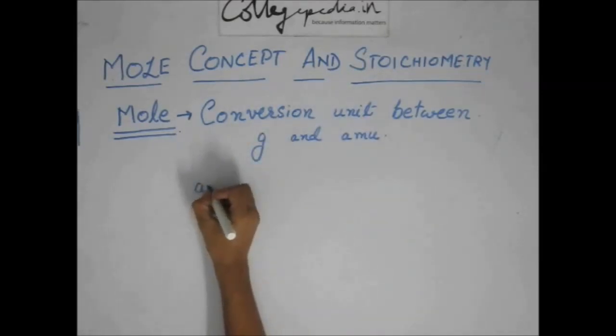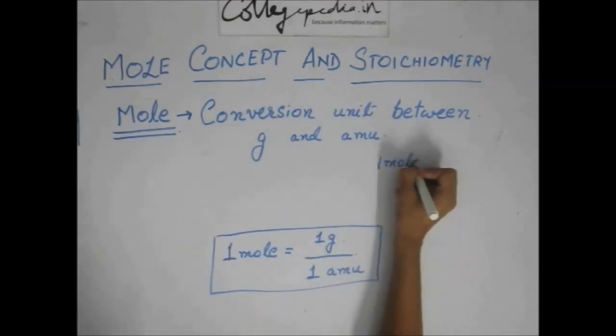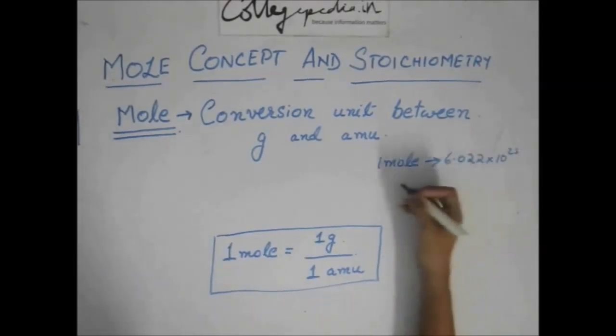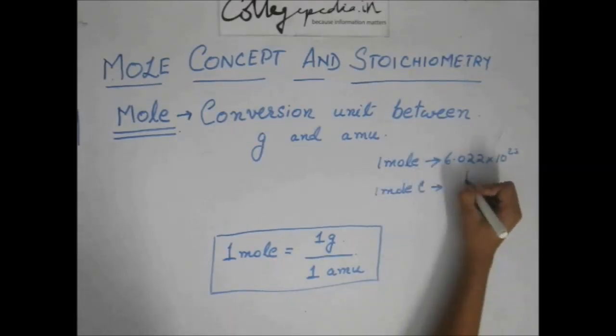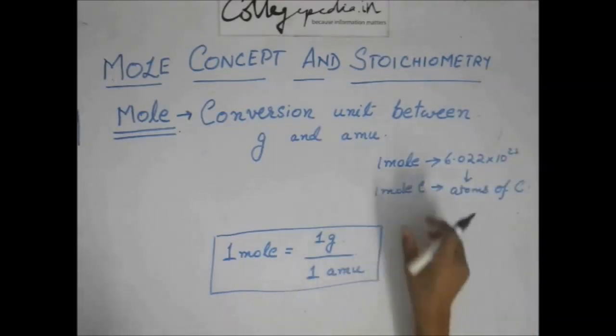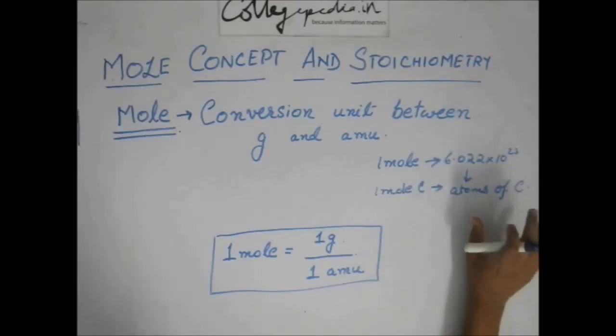Now, what is atomic mass unit? We have seen one mole is 6.022 into 10 to the power 23 particles. Or, in case of one mole carbon, it would be this number of atoms of carbon. In case of an ion, they would be ions. In case of maybe electrons, they may be electrons. In case of protons, they may be protons. So, one mole of anything is this much particles of that thing.